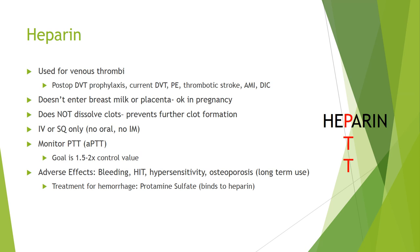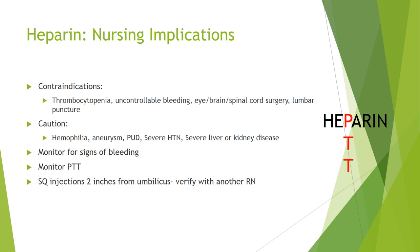With heparin, you may also see osteoporosis develop in patients who have been taking it long-term. If a patient on heparin begins to hemorrhage — blood pressure dropping, heart rate increasing — heparin can be reversed by protamine sulfate, which binds to and deactivates heparin. Patients who should not get heparin include those with severe risk of bleeding, low platelets, uncontrollable bleeding, those who have undergone eye, brain, or spinal surgery, and those who have had or will have a lumbar puncture.